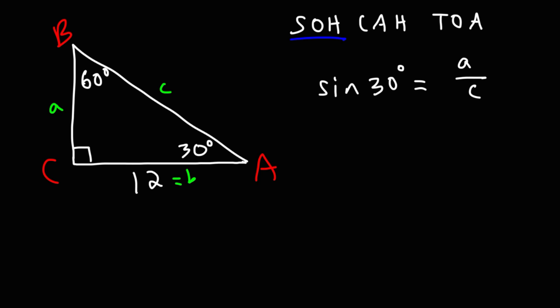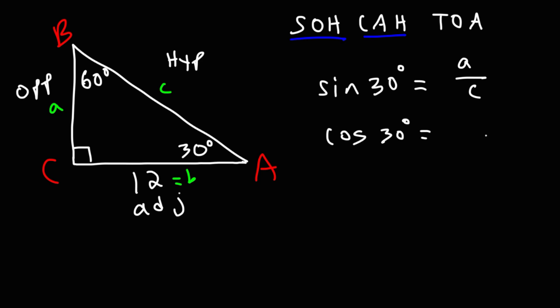So sine 30 = A over C. The CAH part tells us that cosine of the angle — here 30 — equals the adjacent side divided by the hypotenuse. A is opposite to 30 and C is the hypotenuse, so cosine 30 equals the adjacent side B divided by the hypotenuse C.